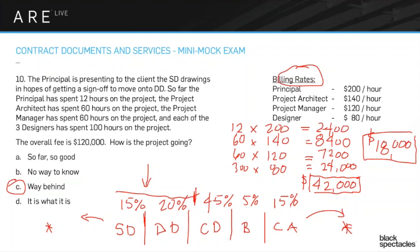An audience member notes the project is way overstaffed, and another asks whether overhead and profit should be included in billing rates. Yes — nobody is actually being paid $200/hour. Those billing rates cover salary plus insurance, rent, overhead expenses, and profit. All of that gets built into the billable rates.